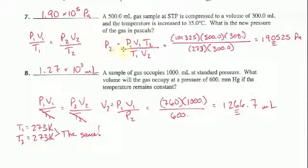That's going to look like this right here: P1 times V1 times T2 divided by T1 multiplied by V2.